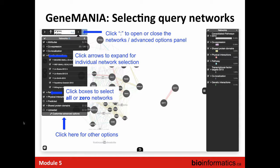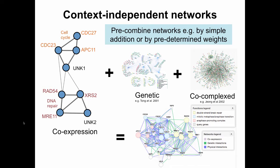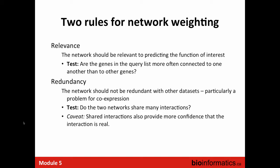I already talked about context-dependent networks. One more point on network weighting: when we assign weights to networks we consider relevance to the query — how much they connect genes in the same list — but we also down-weight redundant networks. If two networks provide the same type of information, we don't want to give that redundant information high weight repeatedly. For example, if you take the same network and repeat it 10 times, the total weight assigned to all 10 should equal the weight it would get if it appeared just once.